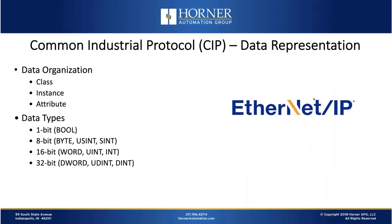To call out a specific piece of data in a CIP device, you really need to know the class, instance, and attribute for that piece of data. Whereas Modbus was designed around word-type and bit-type data exclusively, Ethernet IP and CIP support a wide range of data types ranging from 1-bit to 32-bit — at least 10 different types — so it's a much more modern data handling approach.